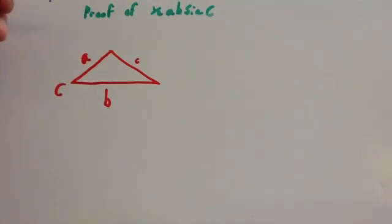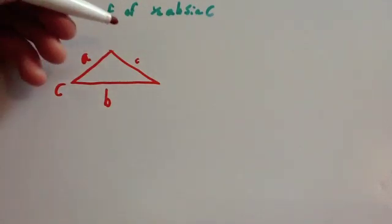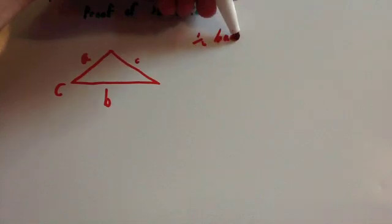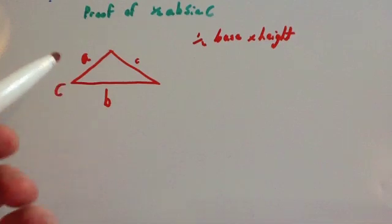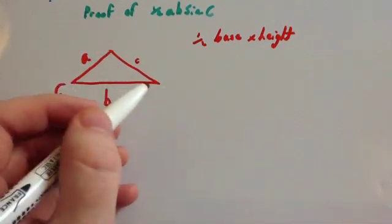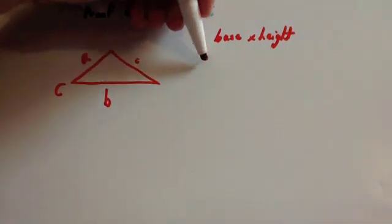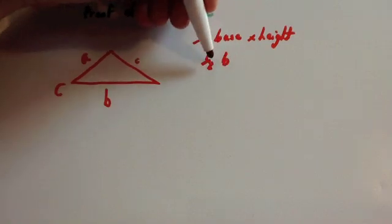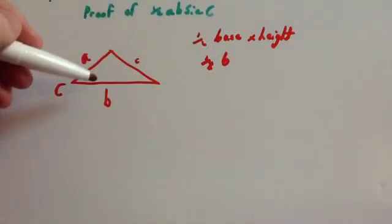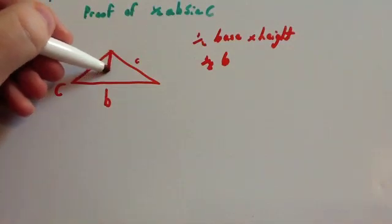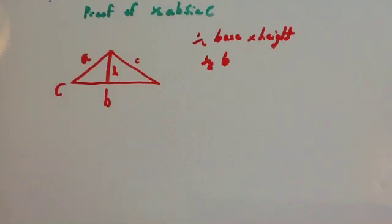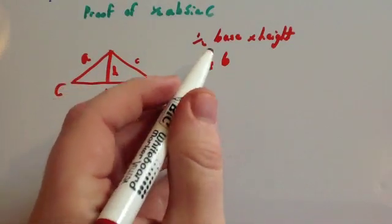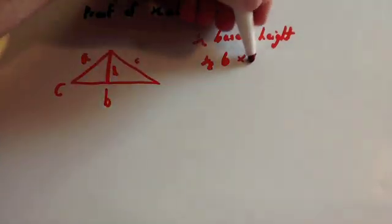You will remember from simple maths that the area of a triangle is half the base times the height. So the base here is b, so let's put that in: half of b. That's a coincidence - the base is b - and times the height. So the height, remember the perpendicular height is this. Now I am going to call this h for the time being. So it's going to be half of the base times the height h.